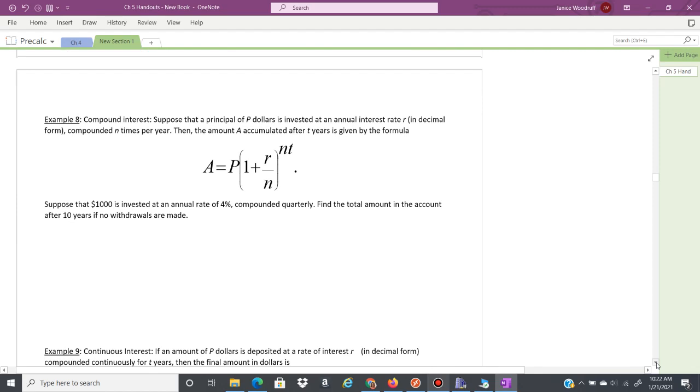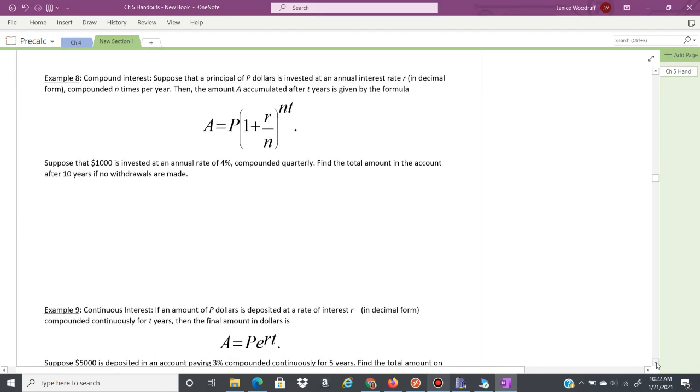Let's take a look at some real world problems where we are using exponents. So we have compound interest. Compound interest is interest that is compounded off of the amount that is currently in the account which includes all deposits plus any interest that has been accrued. So you're actually earning interest off of interest. That is what compound interest is doing. This is your formula for what we call periodic interest.